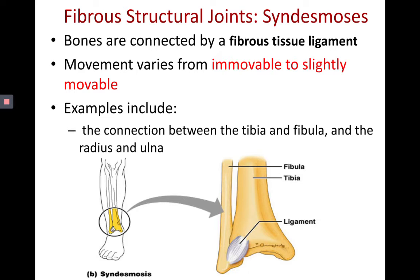There are also connections between the radius and ulna that are good examples of syndesmosis. Again, this is a structural joint, and if we want to talk about its function, we would say it's synarthrotic to amphiarthrotic — it can be immovable, but it could be slightly movable.